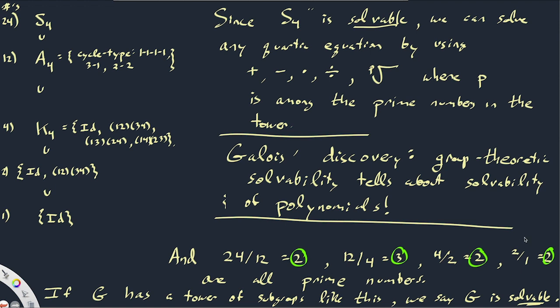This is Galois' discovery: that group theoretic solvability tells us about solvability of polynomials. I'm saying this in modern language because the idea of a group did not exist until after Galois — in fact, Galois invented a fair amount of group theory in order to study the solvability of polynomials, though his work wasn't really understood and incorporated into most mathematicians' education until at least 50 years after his death.